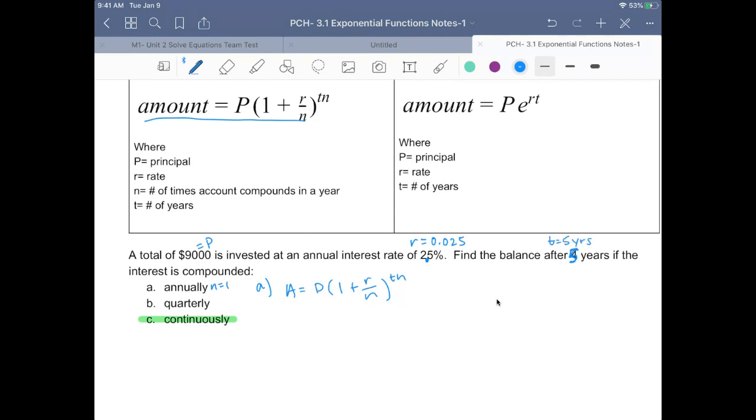So the amount is equal to 9,000 times (1 plus 0.025 over 1) raised to the 5 times 1. I get 9,000 times 1.025, raised to the 5, and I get $10,182.67.